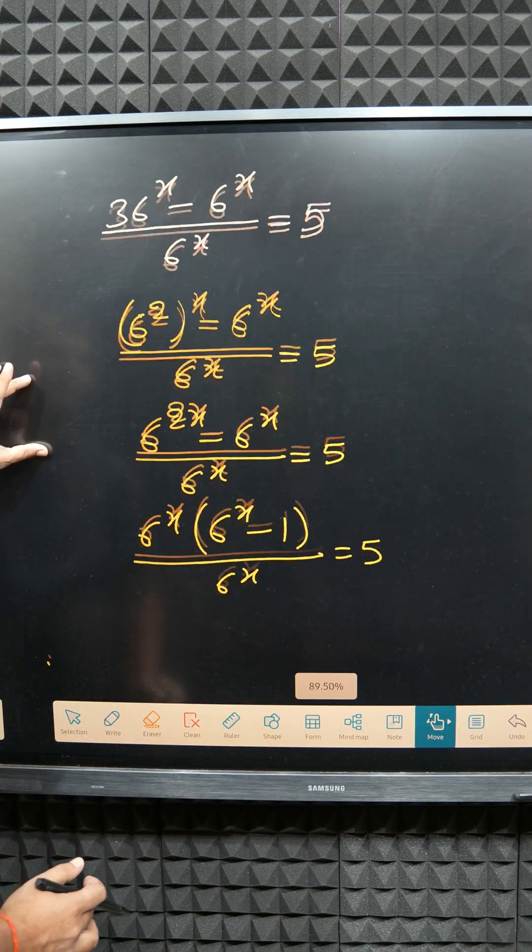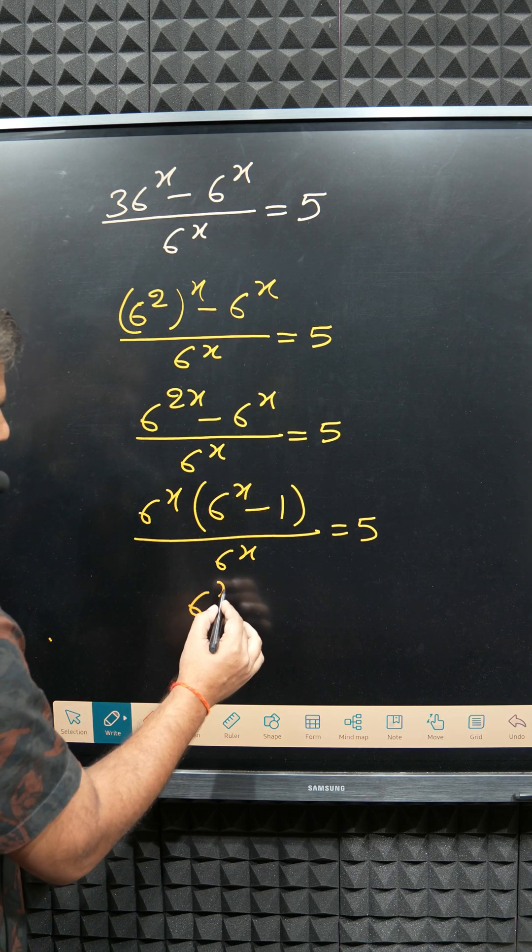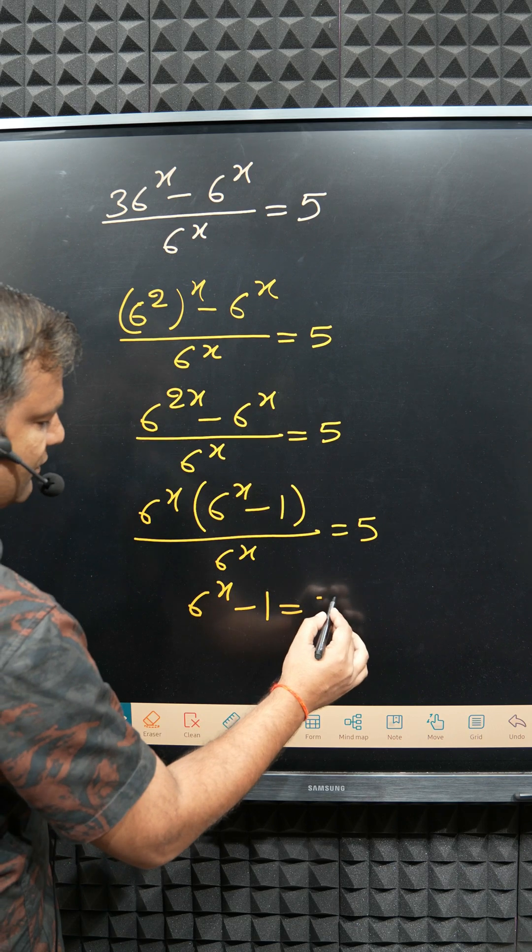Next target, 6 to the power x over 6 to the power x cancel, so 6 to the power x minus 1 equals 5.